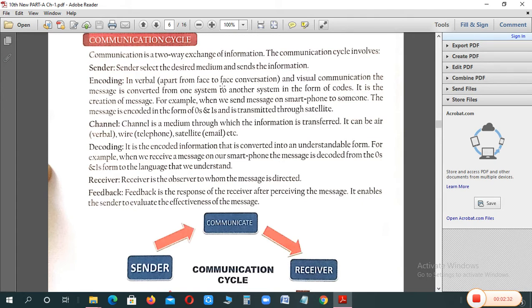in verbal, verbal mein kya hota hai, apart from face-to-face conversation and visual communication, the message is converted from one system to another system in the form of codes. Kahte, jab aap koi data ko send karna chahte ho, woh data, apni original form se convert kis mein ho jata hai, ek code mein convert ho jata hai. It is the creation of message, message create karna. Ye coding, apne aap hi convert hoti hai, beta, hume karne ki zarurat nahi padti, ye step by default, apne aap perform hota hai, through converters.